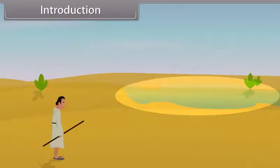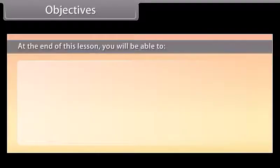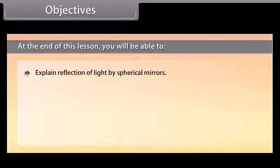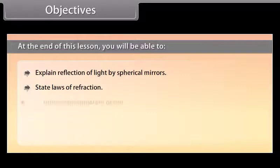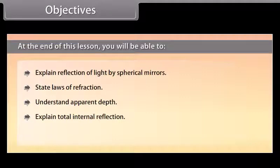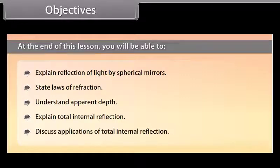Throughout this module we learn reflection and refraction of light. At the end of this lesson, you will be able to: explain reflection of light by spherical mirrors, state the laws of refraction, understand apparent depth, explain total internal reflection, and discuss applications of total internal reflection.